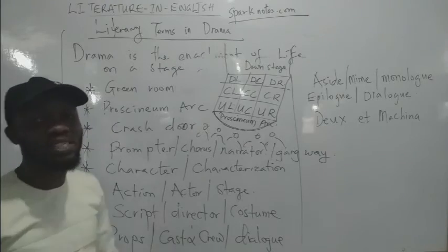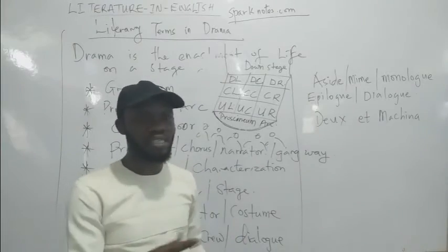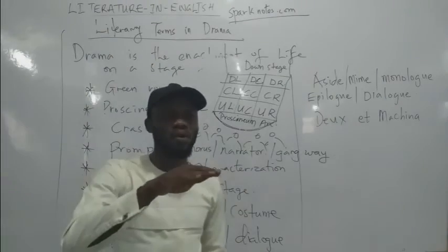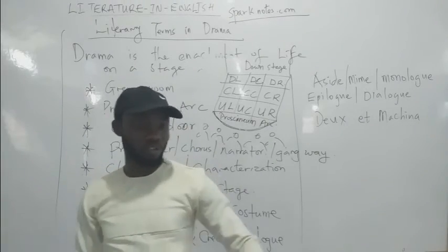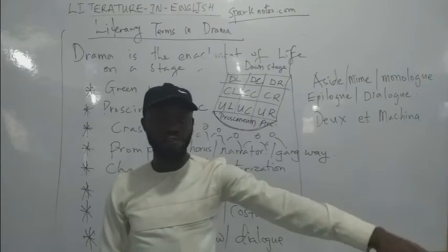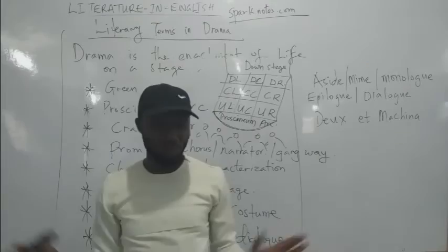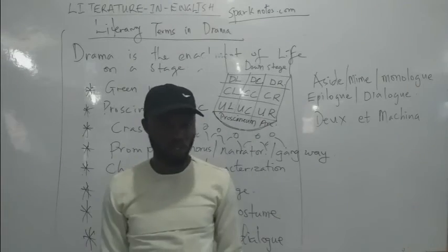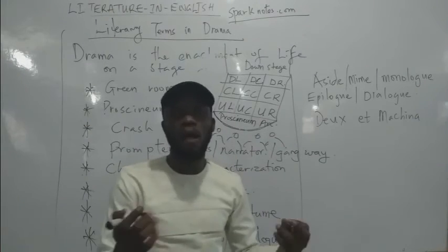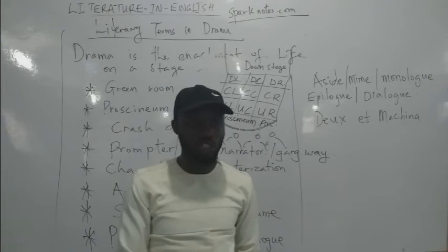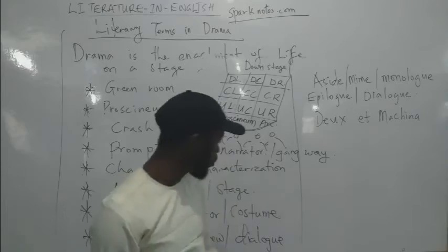Props refers to things we can move around on stage, like tables, chairs, and telephones — things added to the background to tell us where the action is happening. If you want to show a reception or office, they put a table, telephone, files, and a computer. Those moveable objects that help set the scene are called props.